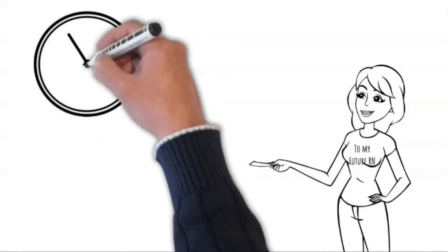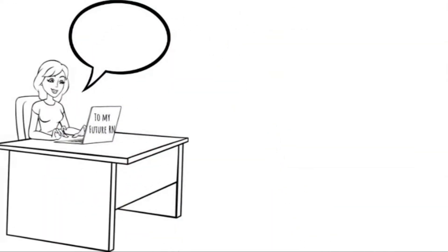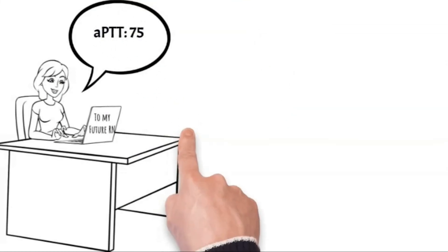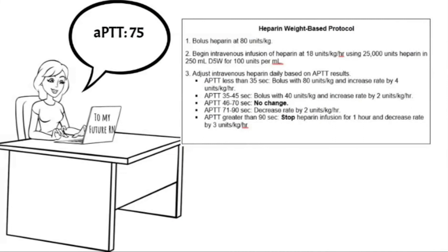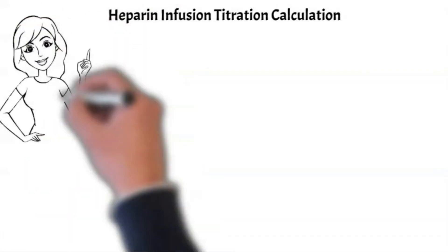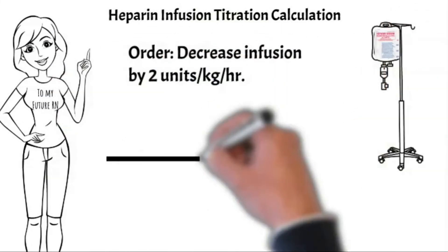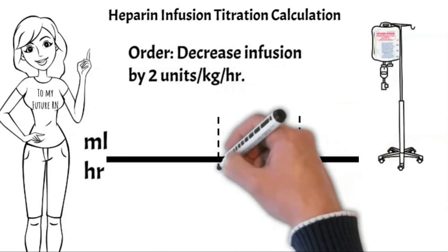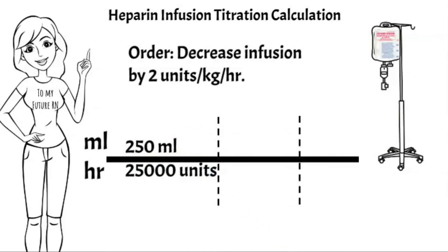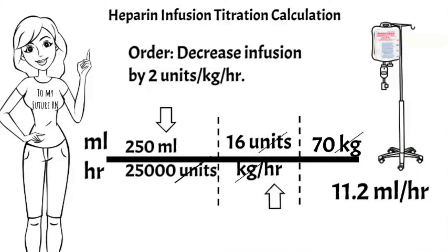It's been six hours since the infusion — now it's time to draw your aPTT. The aPTT results came in at 75. According to the protocol, we need to decrease the infusion rate by 2 units per kilogram per hour. For the titration calculation, instead of 18 units per kilogram per hour we use 16 units per kilogram per hour. Multiply across and divide — the new rate is 11.2 mL per hour.